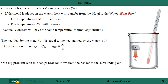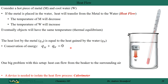One big problem with this setup is that heat can also flow from the beaker to another set of surroundings outside the beaker. We actually need a device to isolate the heat flow process, so we can say that the heat lost by the metal is truly equal to the heat gained by the water, without complicating things with heat loss outside our system.